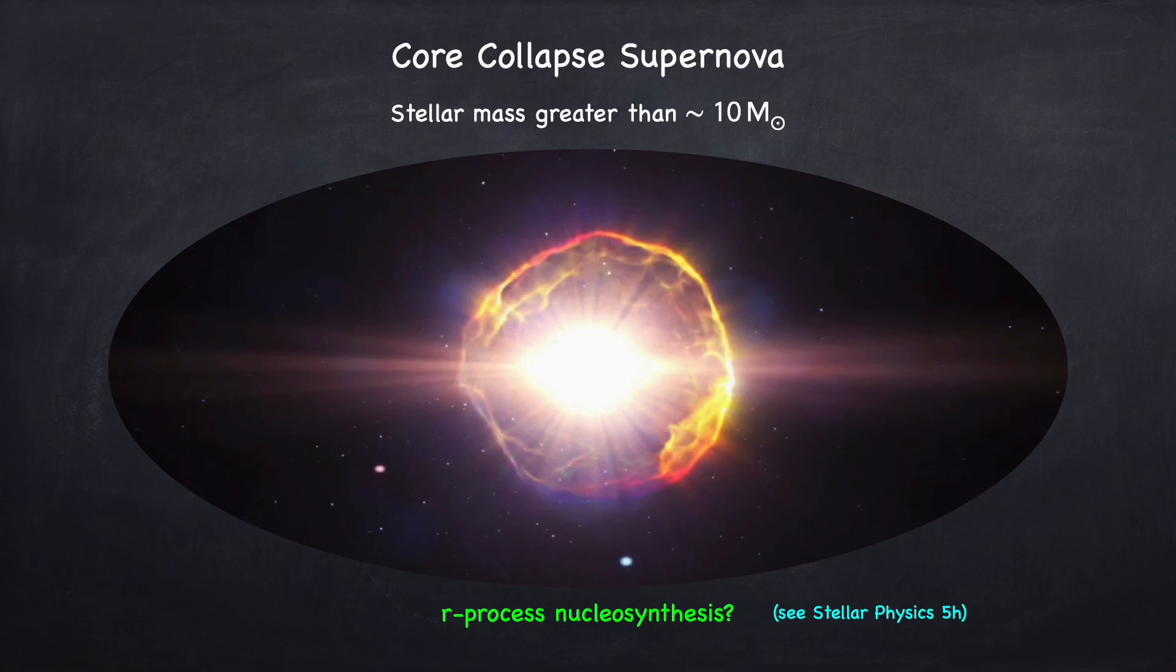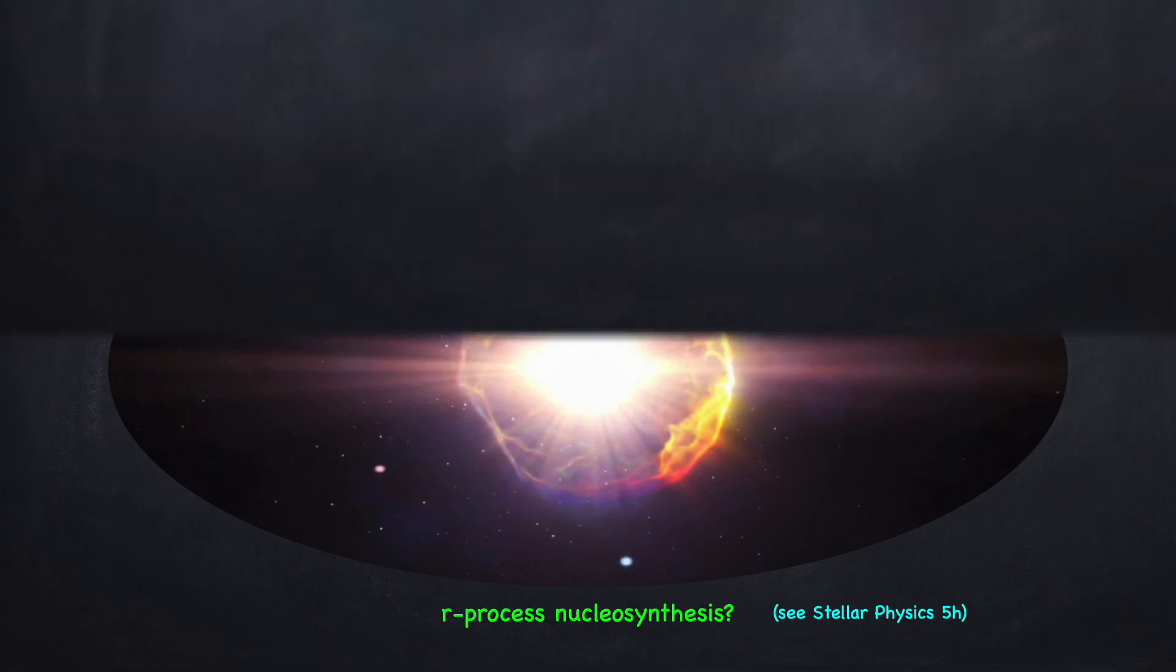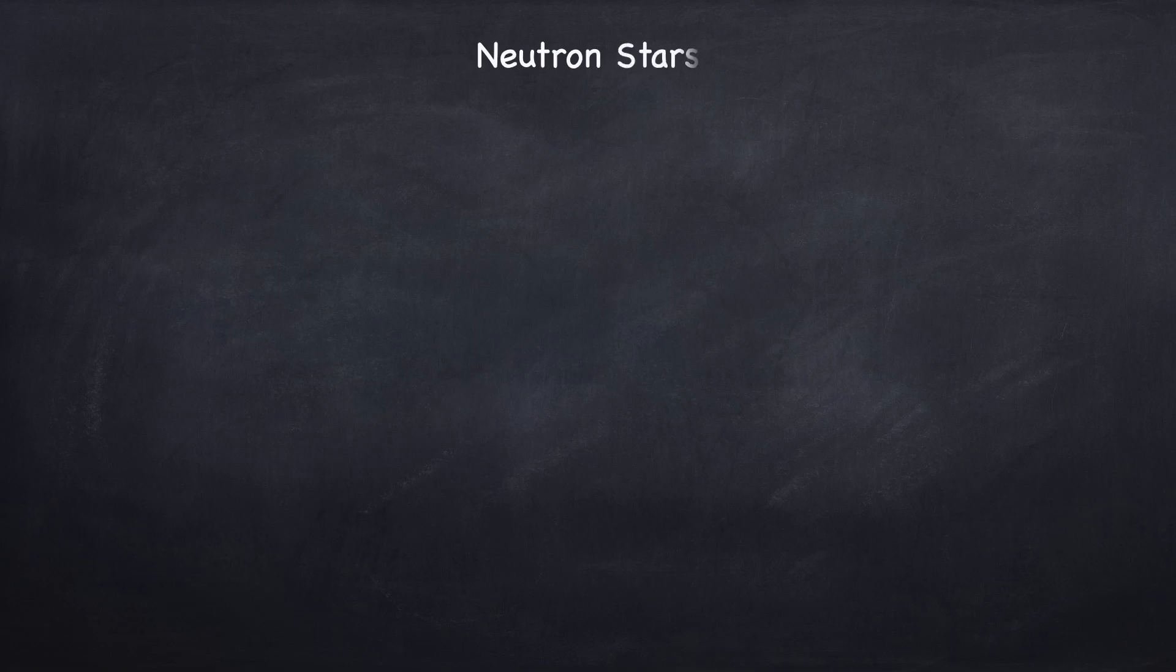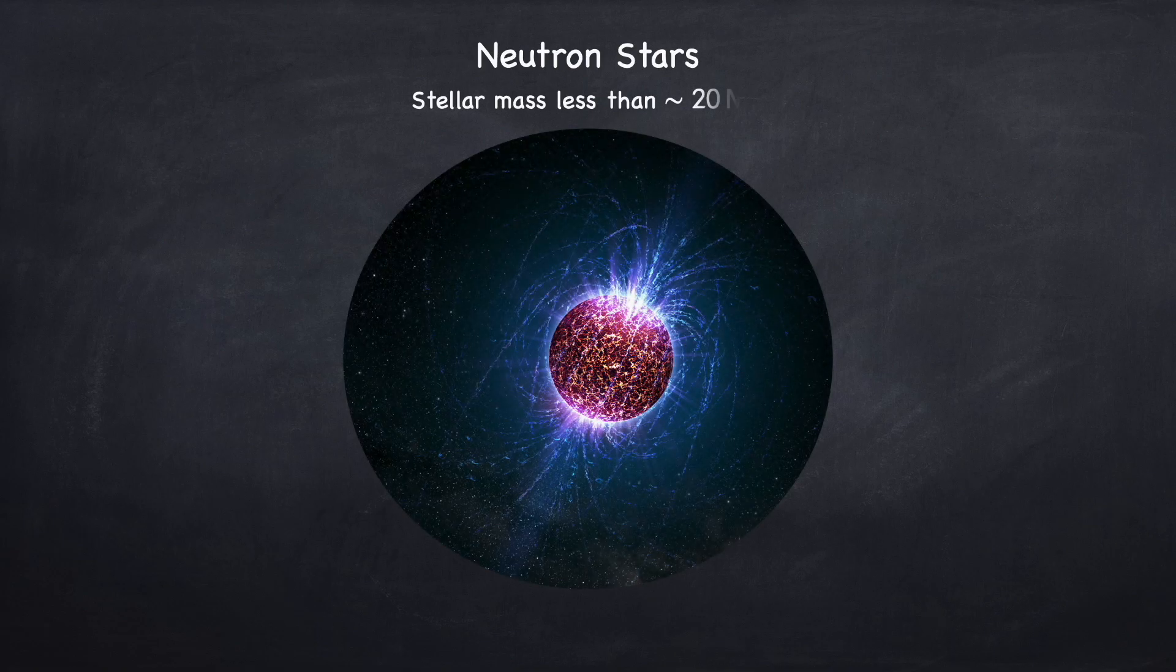Now that the supernova has taken place, what happens to the remaining degenerate core which was at the center of it? Well, there are two possibilities. The first possibility is that it is converted into a neutron star. So this will happen if the stellar mass is less than about 20 solar masses. And remember, it also has to be greater than about 10 solar masses, otherwise you never get the supernova, you end up with the white dwarf instead. So what is a neutron star? It's basically an extremely dense ball of degenerate neutrons held together by gravity, but prevented from collapsing any further due to the neutron degeneracy pressure. Again, if you want to know more about degenerate matter, I covered it in Stellar Physics 4C.